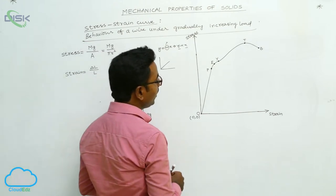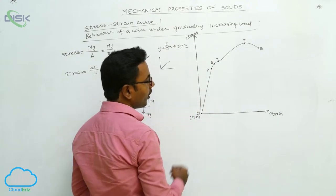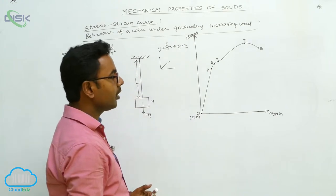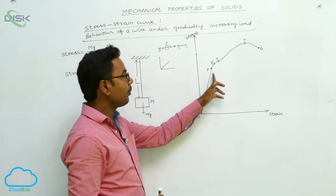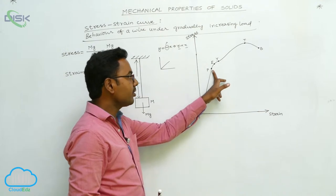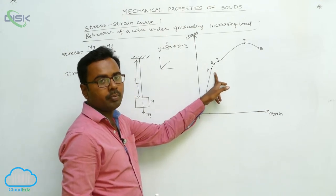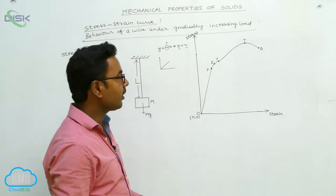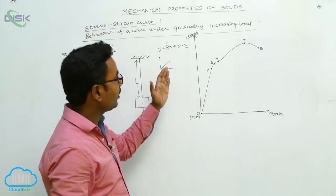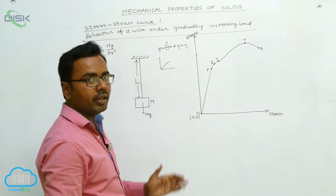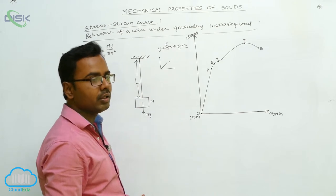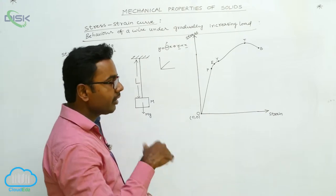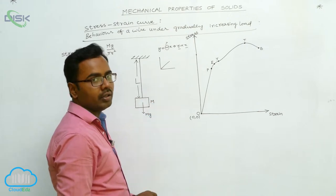Between point P and point E, the graph is curved, meaning there is no direct proportionality between stress and strain. Up to point P only, the graph is a straight line, so Hooke's law is obeyed only up to point P. From P to E the graph is slightly curved, meaning Hooke's law is not obeyed, even though up to point E the wire still retains its elasticity property.